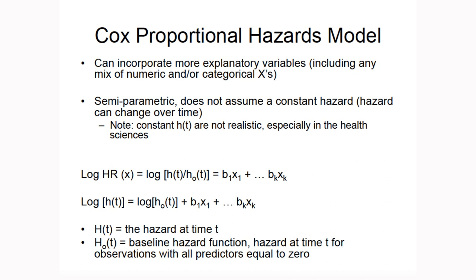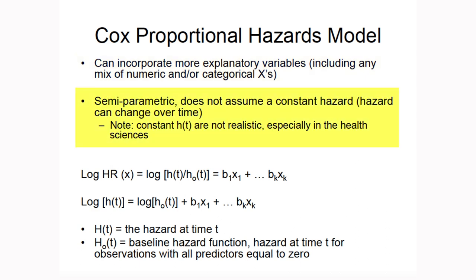A Cox proportional hazards model is just another type of regression model, like linear, logistic, or Poisson regression. You can incorporate many explanatory variables, including numeric ones. It is a semi-parametric method — it does not assume a constant hazard; the hazard is allowed to vary over time. For example, the hazard of relapse after treatment is allowed to change over time. So we're modeling the log hazard at time t to get the log hazard ratio, and ultimately the hazard ratio.